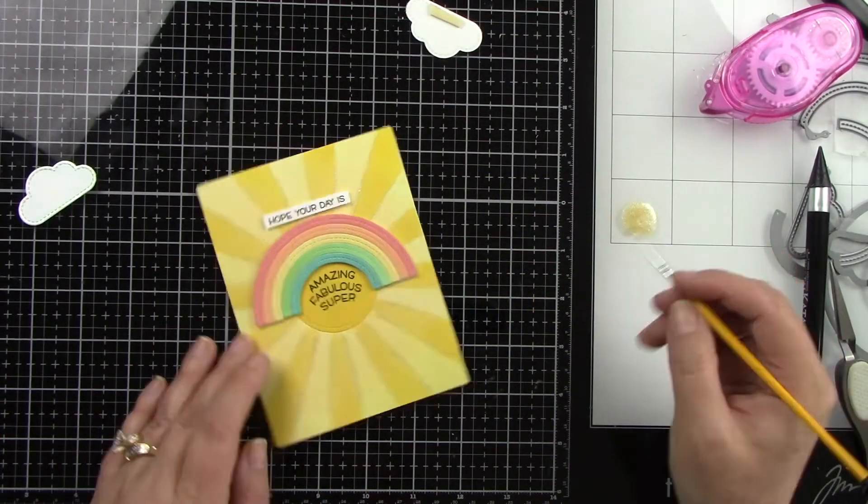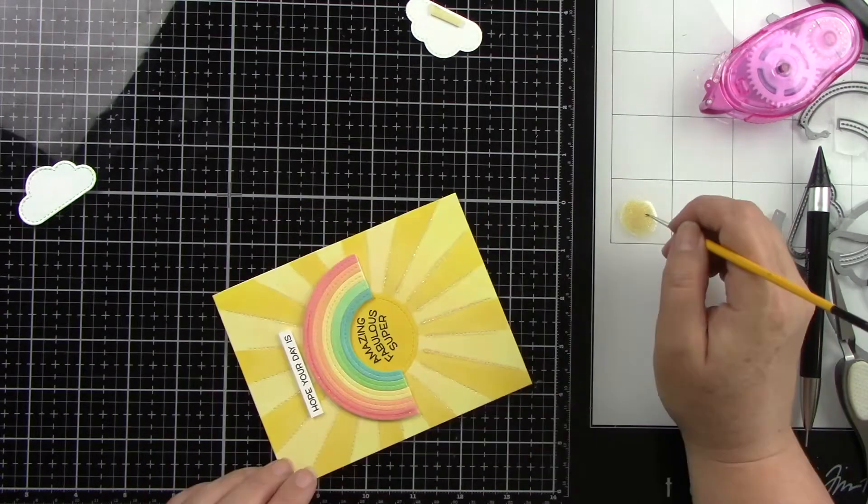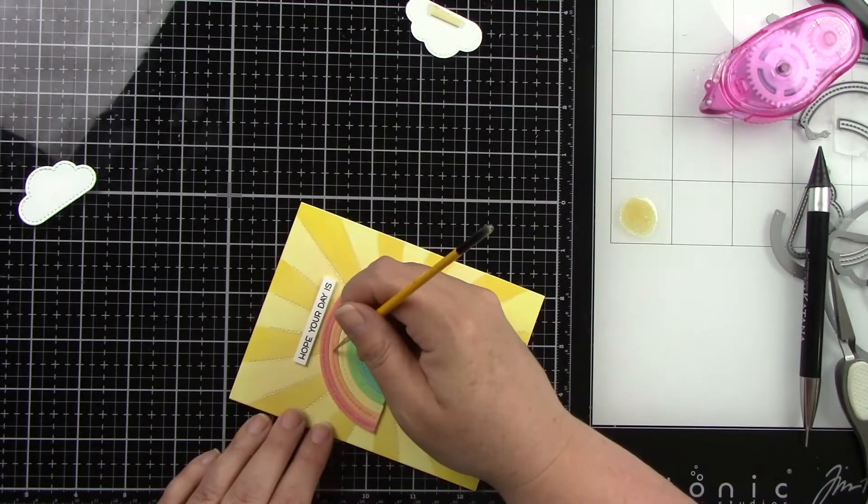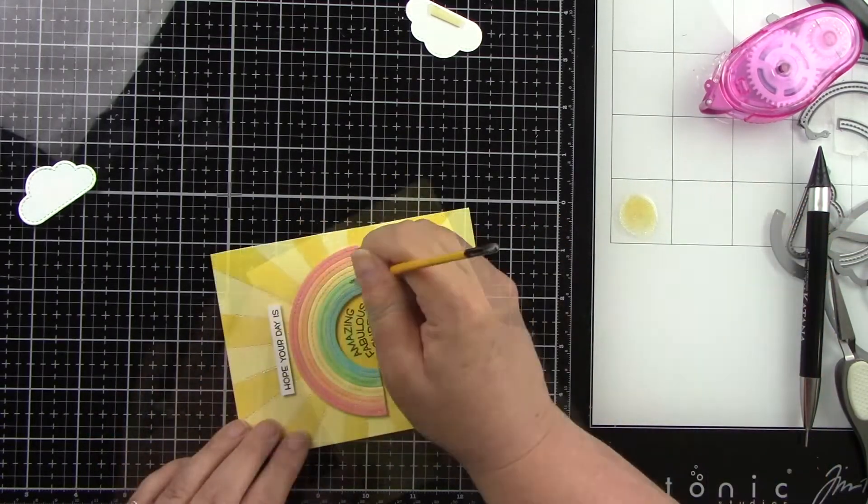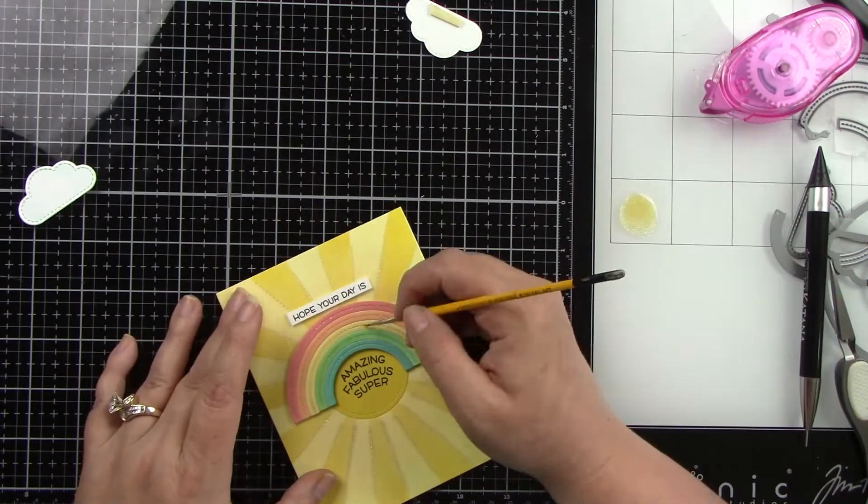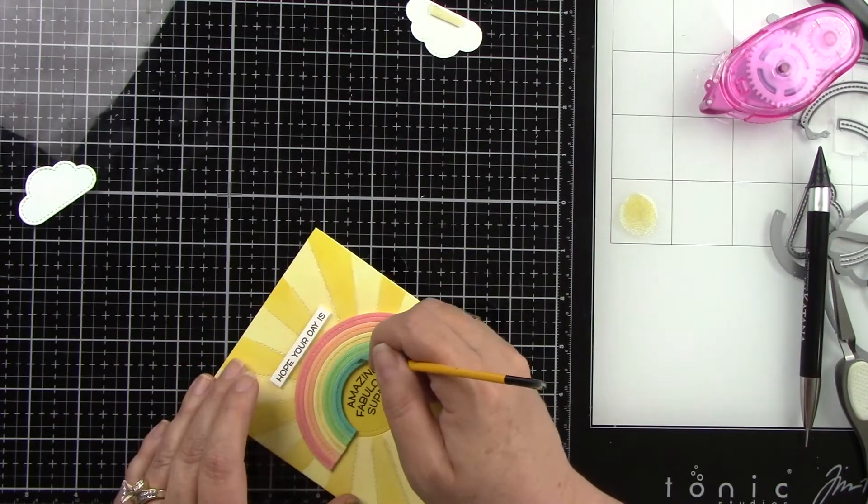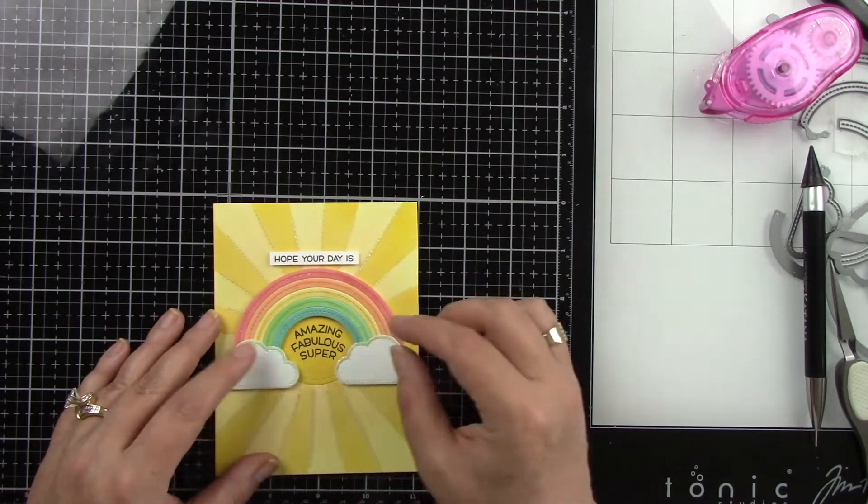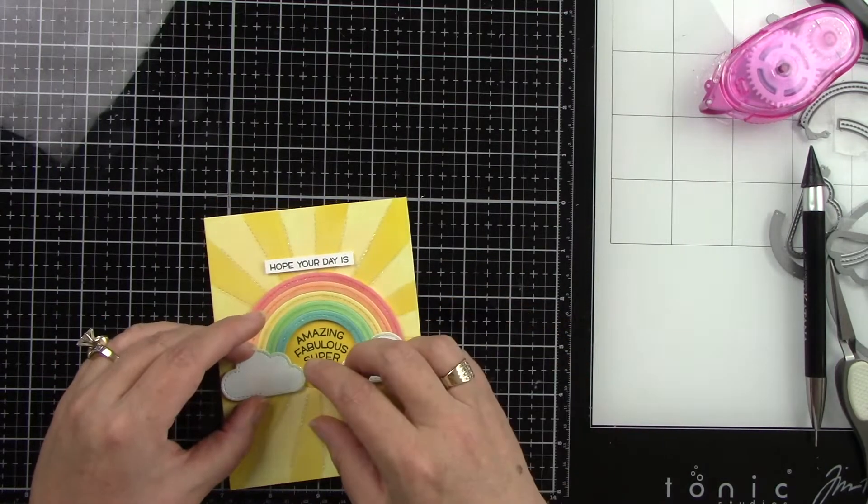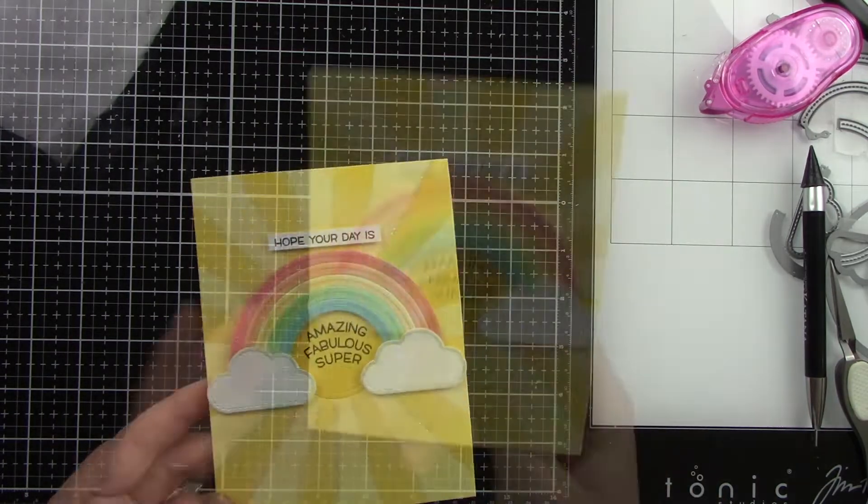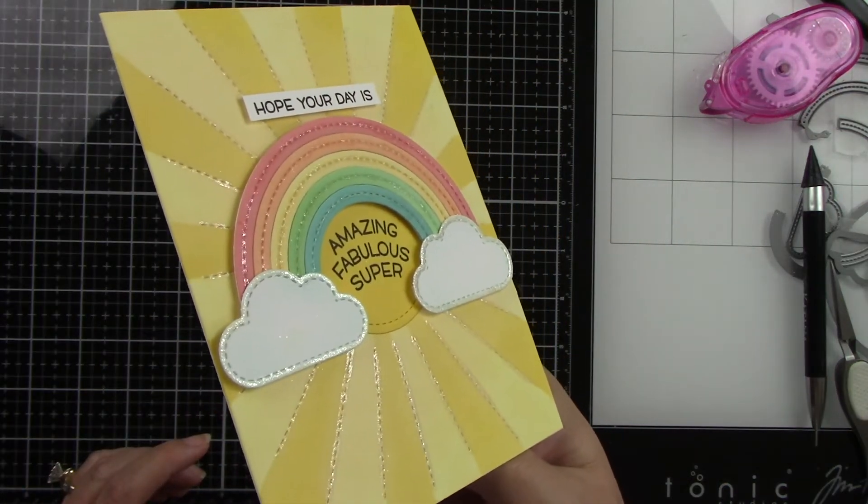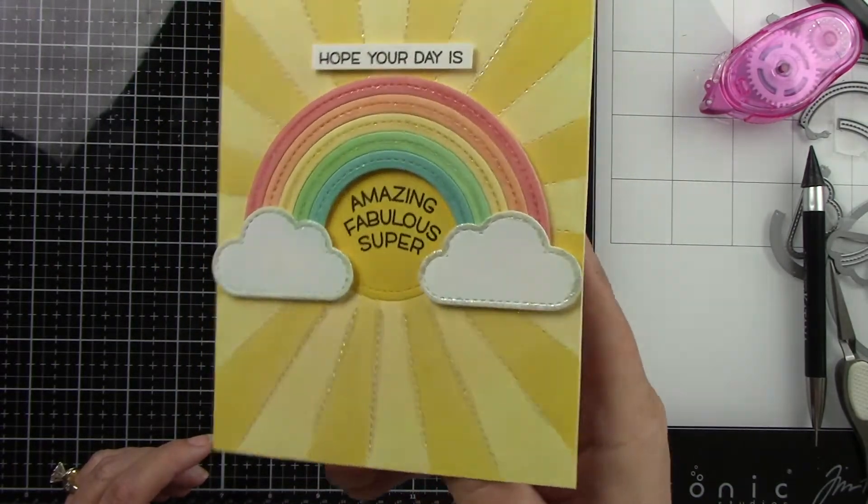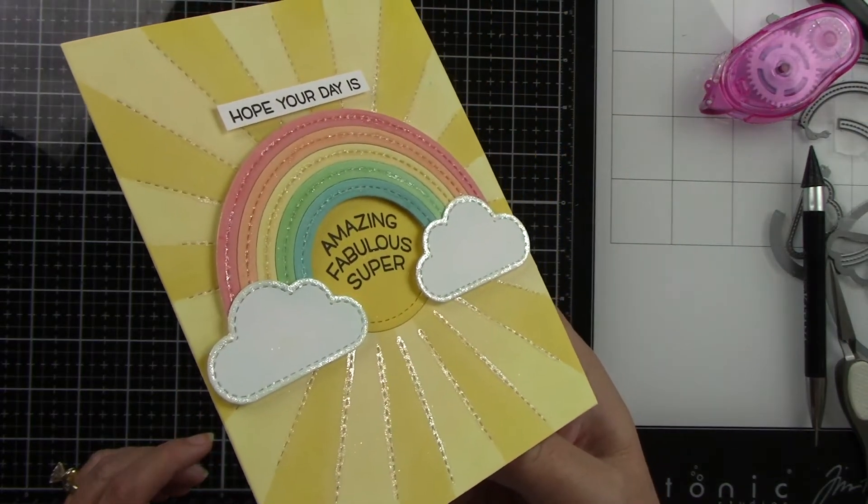Now I'm going to add some liquid stardust to the rainbow pieces on the little stitched lines right in the center of the rainbow, and I'm so glad I did this, because this just added more interest to this whole background. And of course, that liquid stardust is beautiful. Then I'm going to add my cloud pieces. And this is adhered to a two-sized white card base, and this card is finished. So super simple, but look at that glitter and shine, and what a fun little rainbow die, and what a fun backdrop die. Super cute.